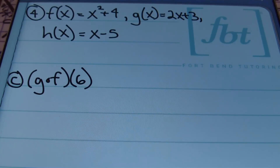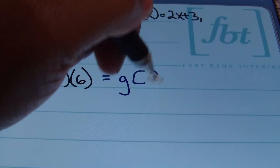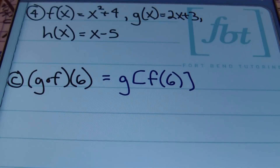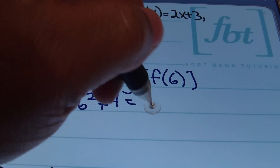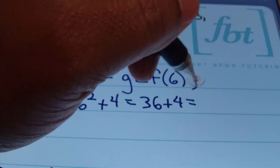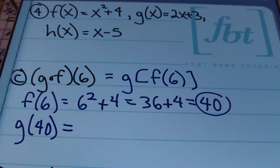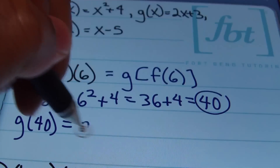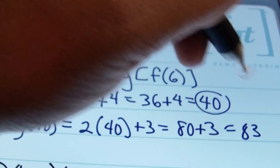Still in problem 4, in part C we have G composite F of 6, meaning G of F of 6. We'll plug 6 into F first: F of 6 is 6 squared plus 4. Six squared is 36, plus 4 results in 40. We take this result of 40 and plug it into G. Finding G of 40: 2 times 40 plus 3 gives 80 plus 3, and the answer is 83.